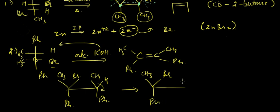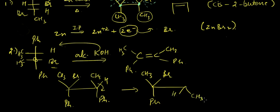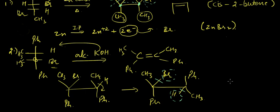We rotate the conformer to get the anti-periplanar arrangement. After rotation we have H and Br anti to each other. The anti-elimination takes place — the C–Br and C–H bonds are cleaved — and the product formed has Ph on both carbons with CH3 groups on the same side, giving us the E configuration.